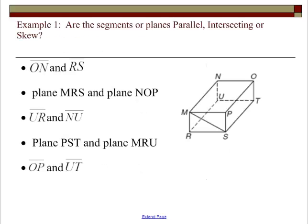Take a minute. Try answering if these segments or if these planes are parallel, intersecting, or skew. So ON and RS. ON is up here. RS is here. Now it looks like they're skew because they're on different planes. But because they're going in the same direction, these two are actually parallel.